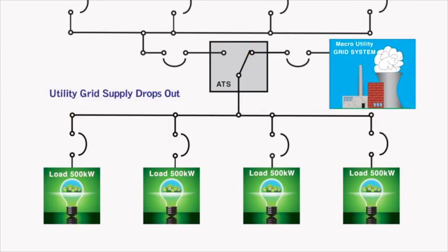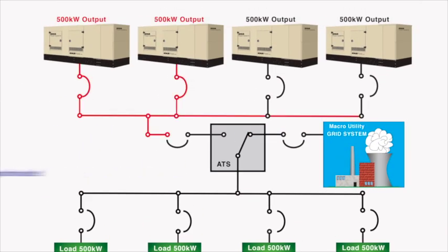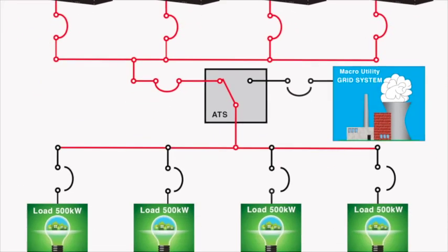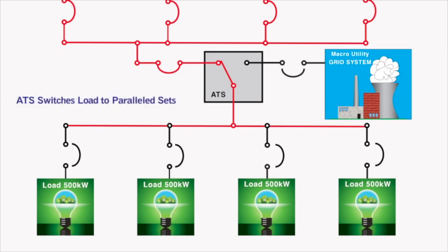When the utility drops out, all the standby sets will start. The first set to start becomes the reference point for the other three sets to synchronize with. When all sets are synchronized and in parallel, they supply the load through the ATS.